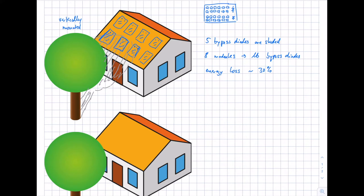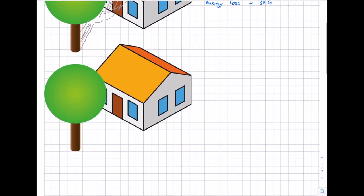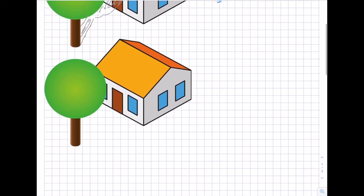Can we reduce this energy loss simply by switching orientation — turning the modules so they are not mounted vertically but horizontally? Let's think about this second example where the modules are horizontally mounted.